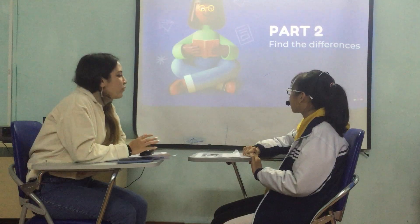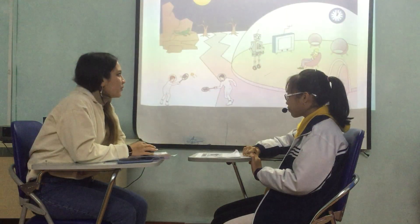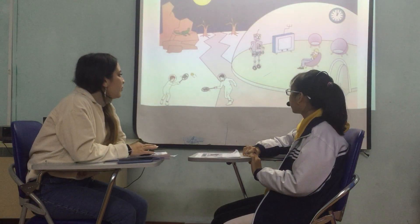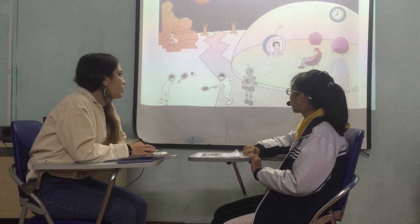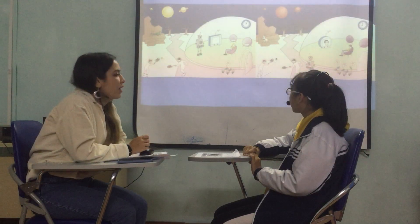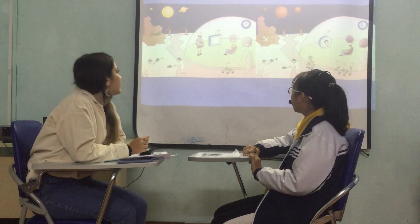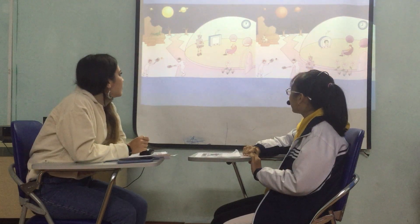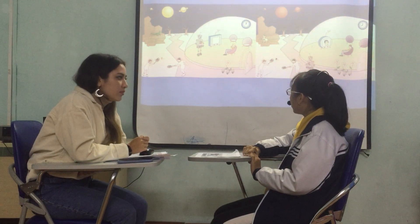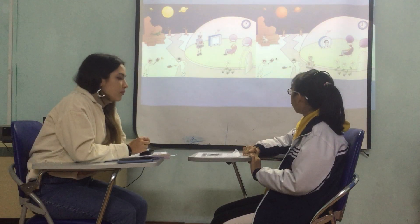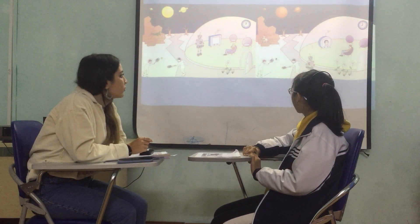Now we need to find the differences. This is the first picture. This is the second picture. We need to find at least five differences. In picture one, there is a lizard on the rocks. But in picture two, there is a rabbit on the rocks.